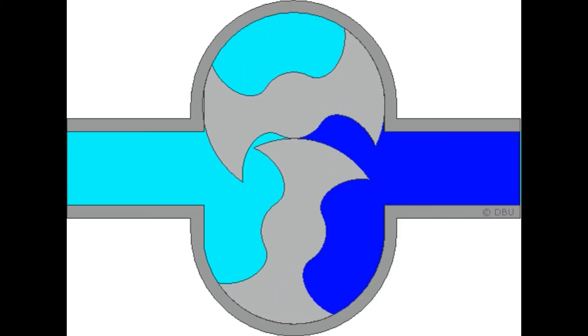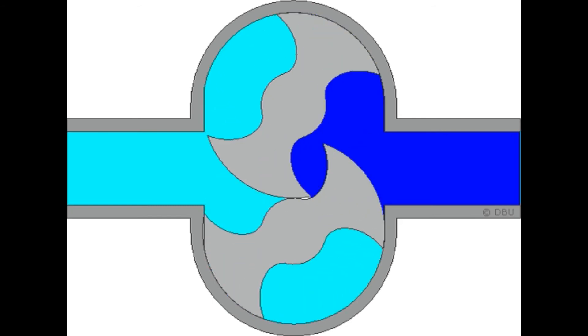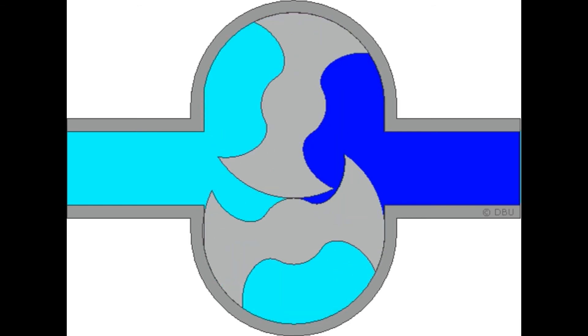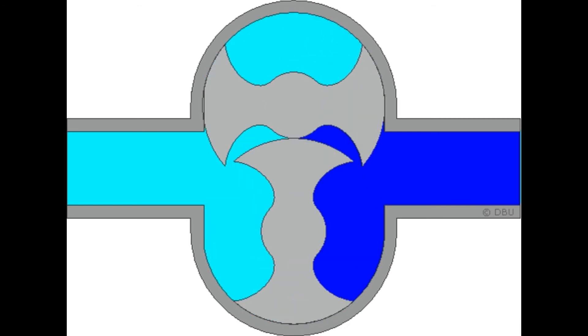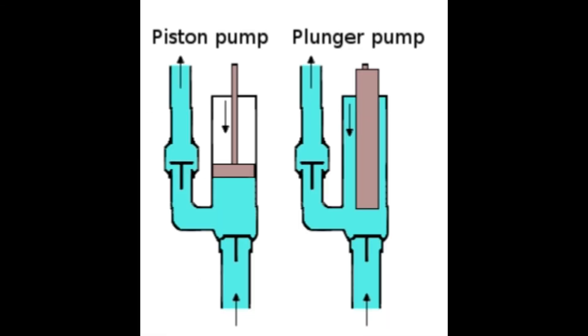What is the roots type pump? Named after the Roots brothers who invented it, this lobe pump displaces the liquid trapped between two long helical rotors, each fitted into the other one perpendicular at 90 degrees.